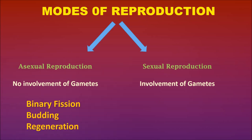The main modes of asexual reproduction are binary fission, budding, and regeneration. Sexual reproduction occurs in the modes of viviparous and oviparous.